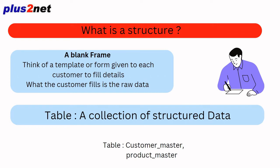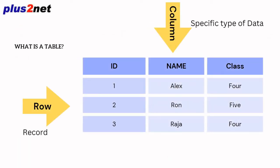The student is expected to fill phone number under the phone number column, and so on. Even a customer fills their raw data in a structured frame or template, and that becomes a collection of structured data. We call a table a collection of structured data which uses a template in the background. Now let's think about how a table structure looks: without any data, just column names. The name column should have a specific data type, class should have specific values, ID should be incremental, and date of birth should be stored in a date column.